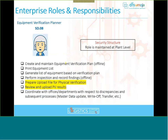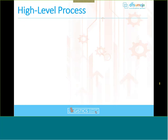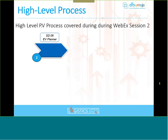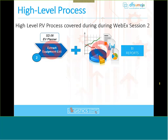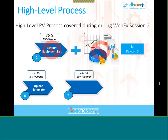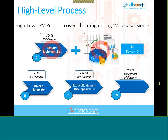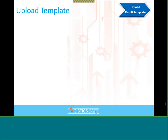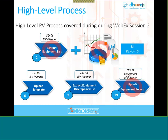In the PowerPoint flow: an equipment verification plan was created by SD08, we print the equipment list, generate it based on the verification plan, and perform inspection recording findings — that was yesterday. Today we cover preparing the upload file for physical verification and reviewing and uploading PV results. This corresponds to high-level process step six, while yesterday was step two.